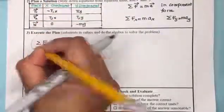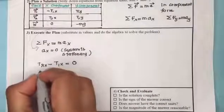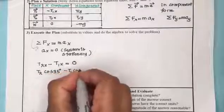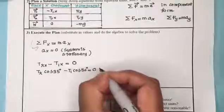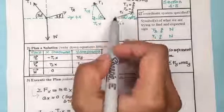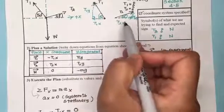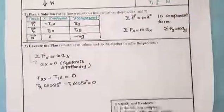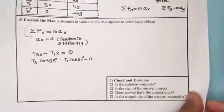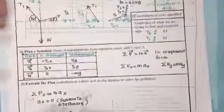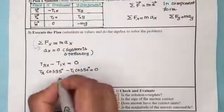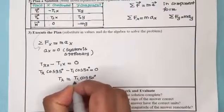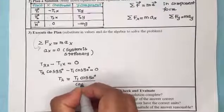Expressing T2x and T1x in terms of cosine: T2x equals T2·cos35 and T1x equals T1·cos50, because T1x and T2x are the adjacent sides of the vector triangle. Solving for T2 in terms of T1 gives: T2 equals T1·cos50 divided by cos35.